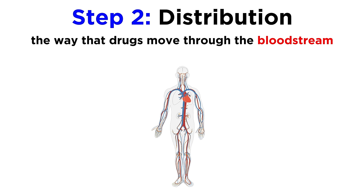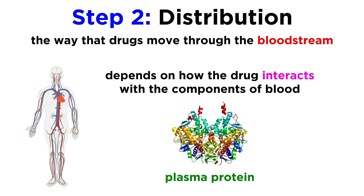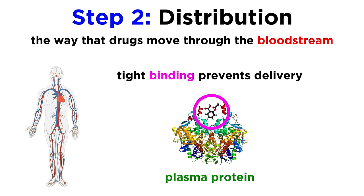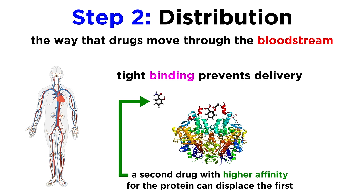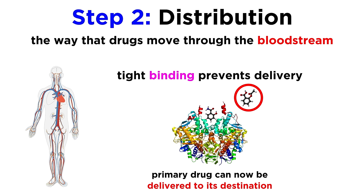Next we mentioned distribution. This is the way that drugs move through the bloodstream after being absorbed into it or injected into it. There are many factors that influence this, like the way that the drug interacts with the components of blood, such as plasma proteins. If the drug binds too tightly to these proteins, it will not be able to reach its target cells. Sometimes a second drug is administered in conjunction with the first that has a higher affinity for these proteins, thus serving the sole purpose of displacing the primary drug once bound to the protein, allowing it to be delivered to its destination.